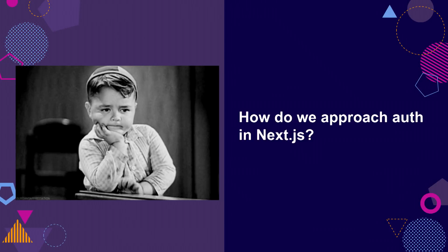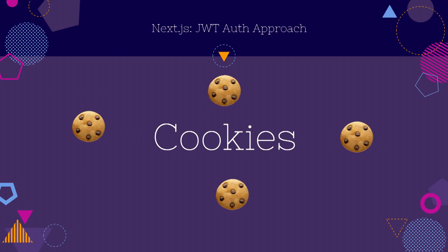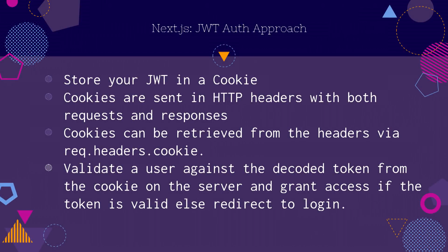How do we approach auth now in Next.js? It's very simple: cookies. So we're going to go through the flow again. You see some people argue about JSON Web Tokens — JWT versus cookies. But you can actually store your JWT in a cookie. Your JWT is a token, a JSON Web Token — you can store it in a cookie or somewhere else. So we take this approach: you store your JWT in a cookie. The cookies are sent in your HTTP headers with both requests and responses. Then your cookies can be retrieved from the header via your request headers. You validate the user against the decoded token from the cookie on the server, and you grant access if the token is valid, else you redirect somewhere else.